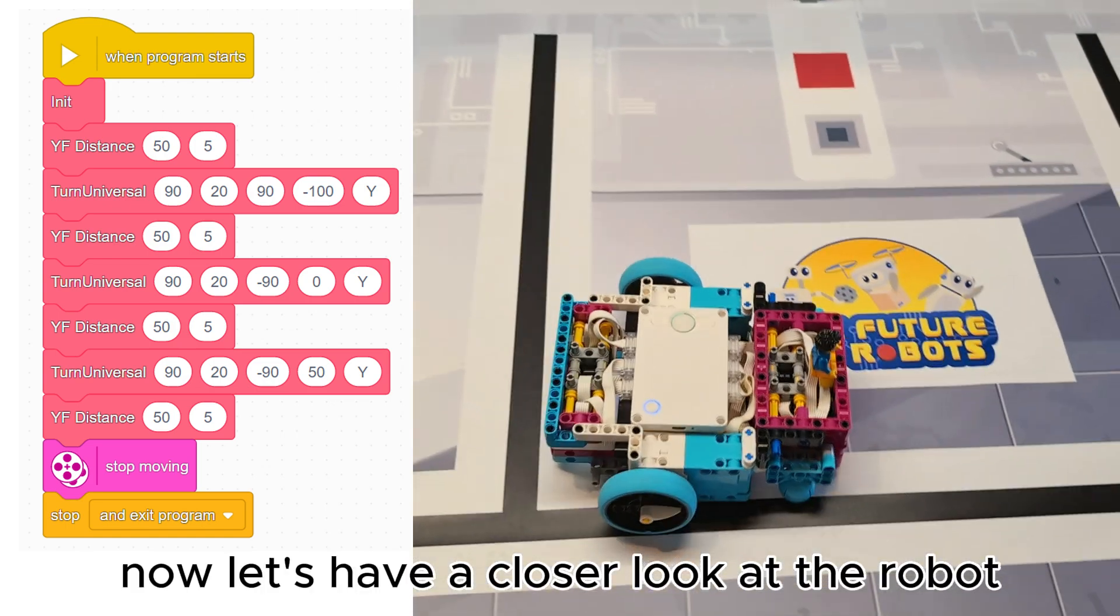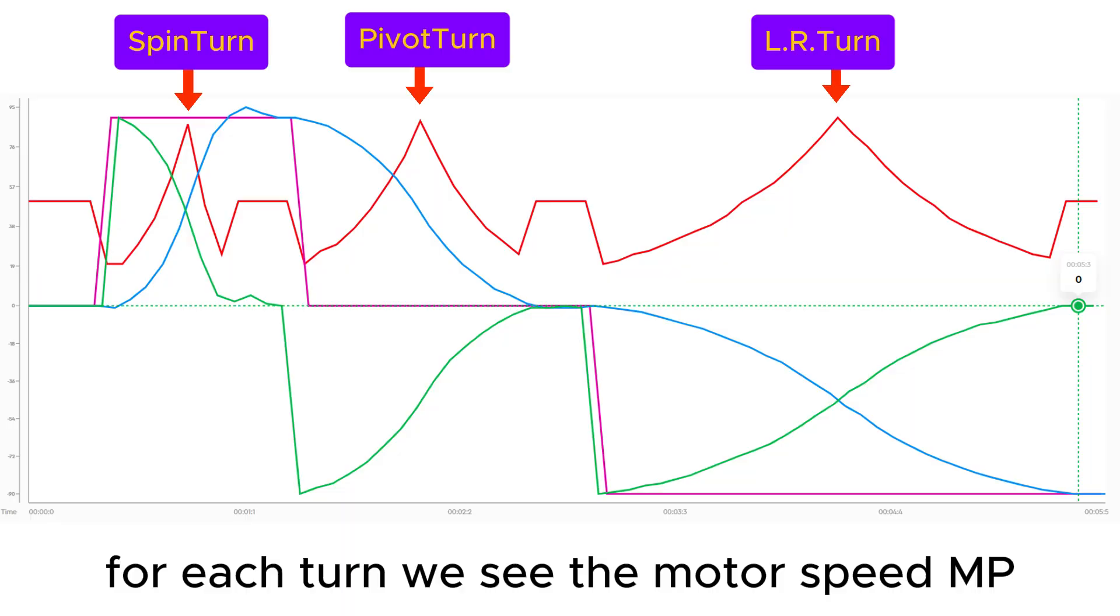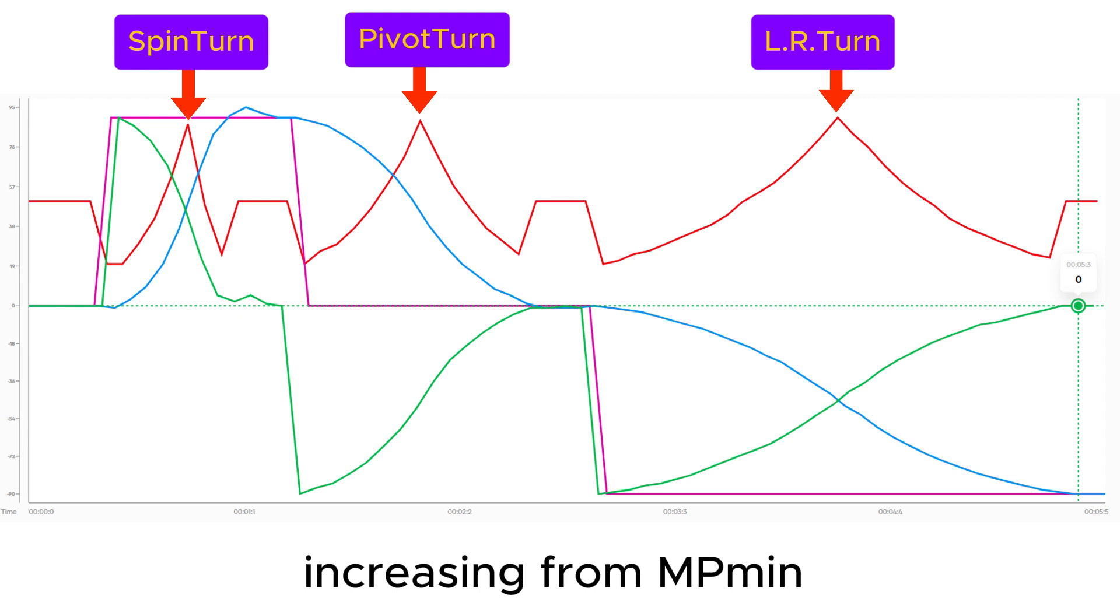Now let's have a closer look at the robot doing a spin turn, a pivot turn and a large radius turn. For each turn we see the motor speed MP increasing from MP min up to MP max and back again.